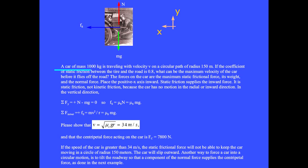A car of mass 1,000 kilograms is traveling with velocity V on a circular path of radius 150 meters. If the maximum coefficient of static friction between the tire and the road is 0.8, what can be the maximum velocity of the car before it flies off the road? The forces on the car are the inward maximum static frictional force, its downward weight, and the upward normal force. Place the positive x-axis inward. Static friction supplies the inward force — it is static friction, not kinetic friction, because the car has no motion in the radial direction.